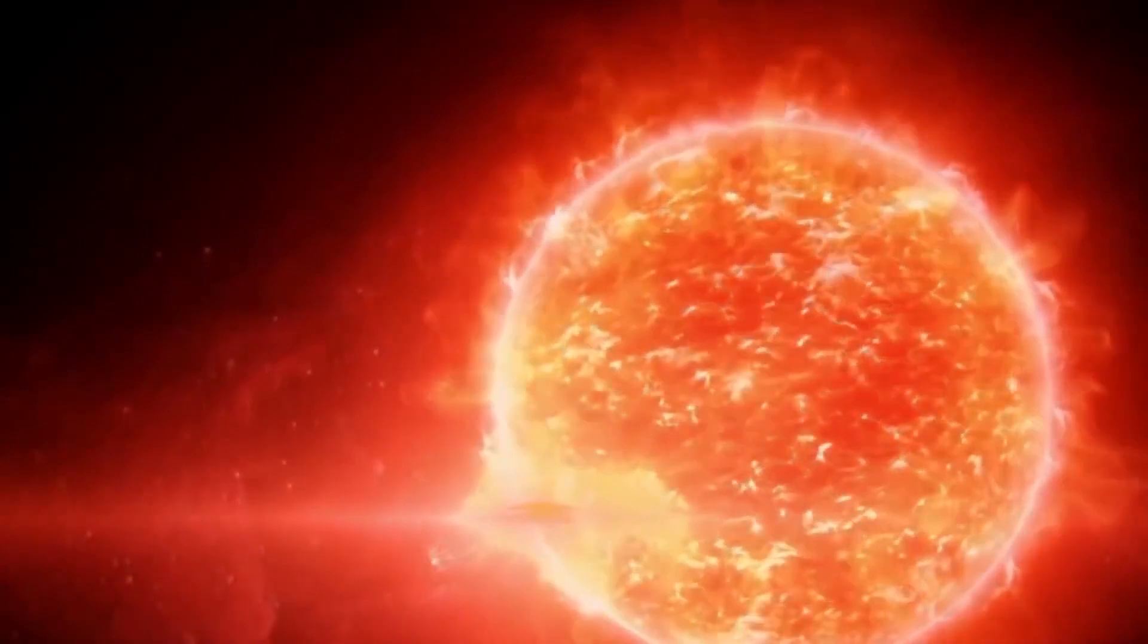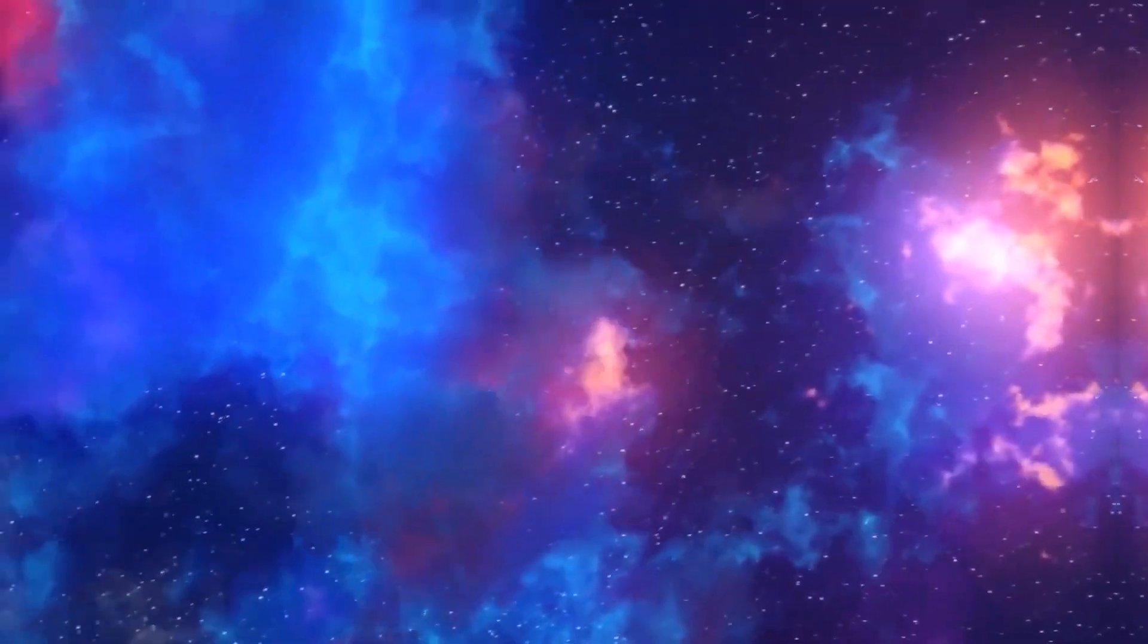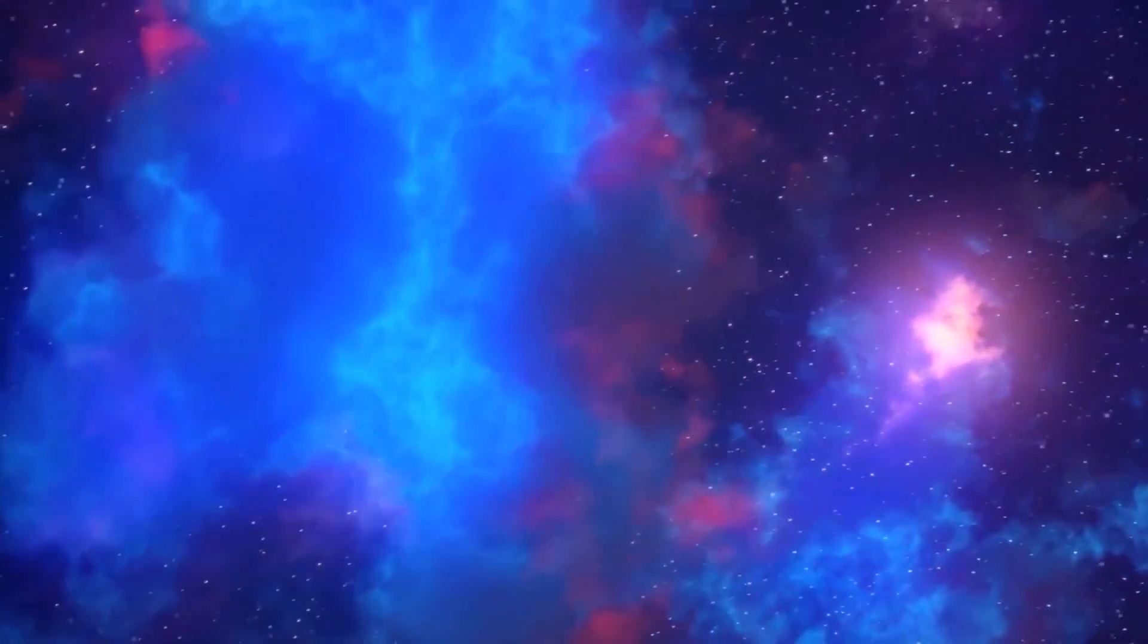Eventually, nuclear fusion begins igniting a star's store of hydrogen and it starts to shine. Planets form and orbit the star which could also be how our sun and solar system came into existence.